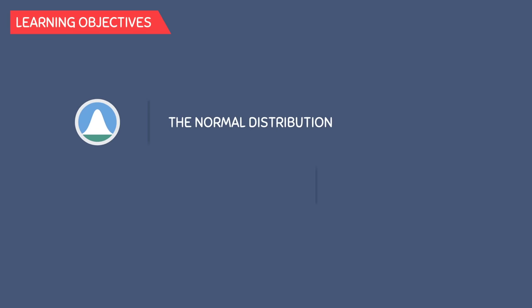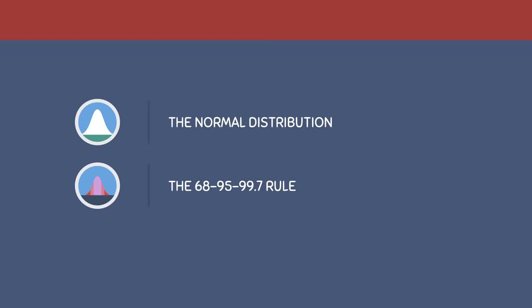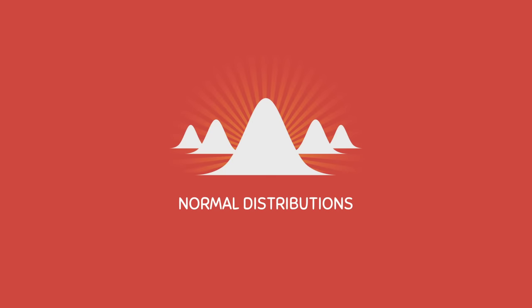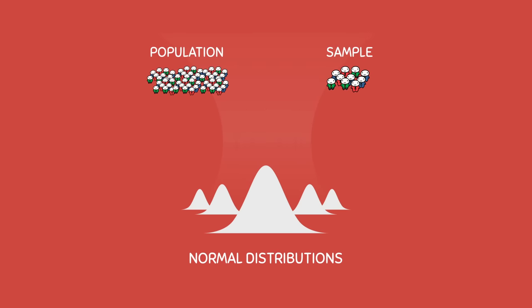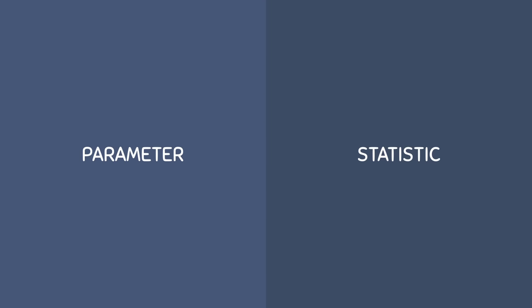In this video we'll be learning about the normal distribution and the 68-95-99.7 rule. When we talk about normal distributions, we refer to data we get from a population or sample. So before we actually talk about the normal distribution, we need to first distinguish the difference between a parameter and a statistic.